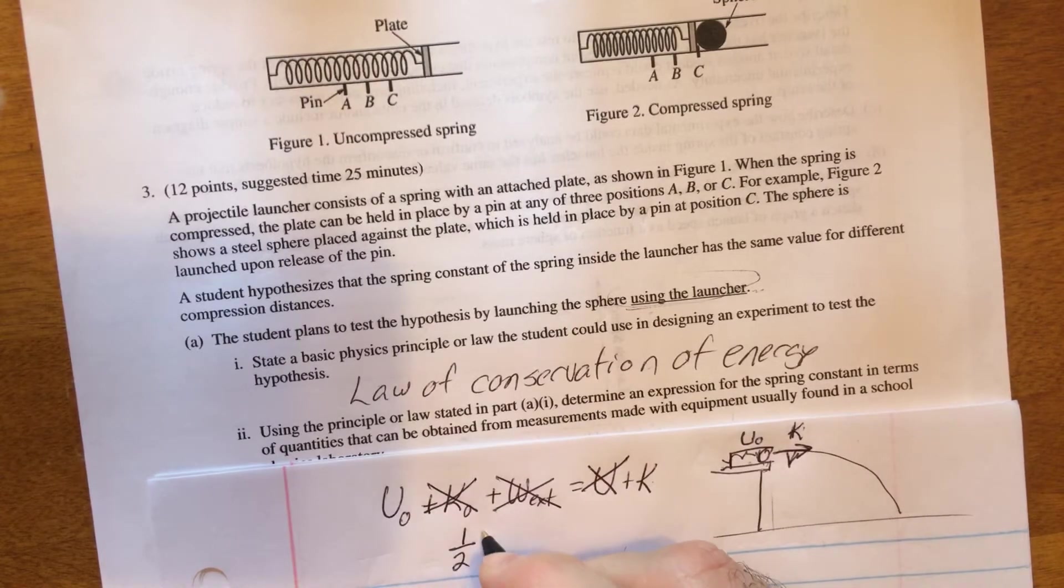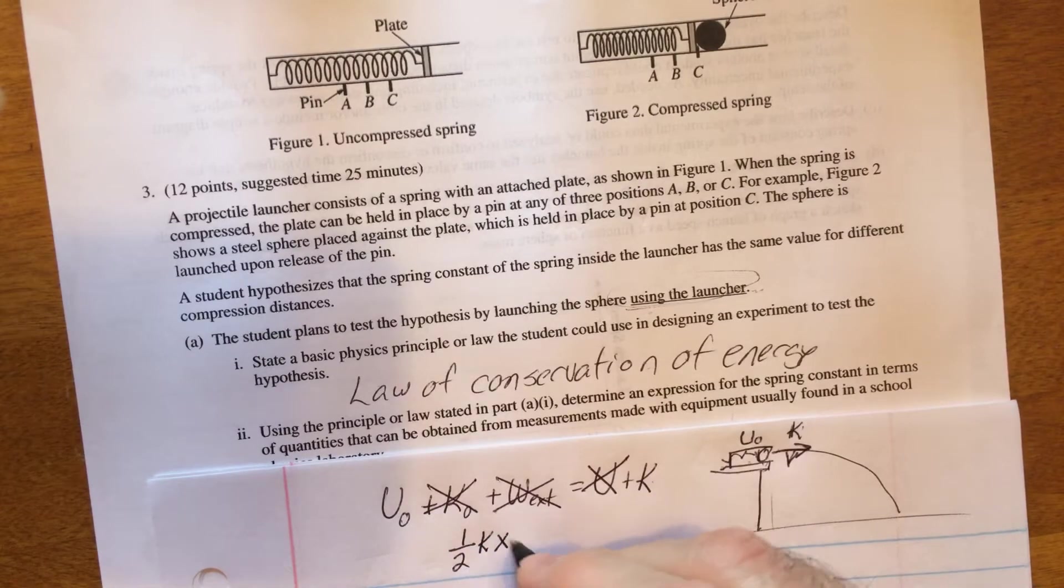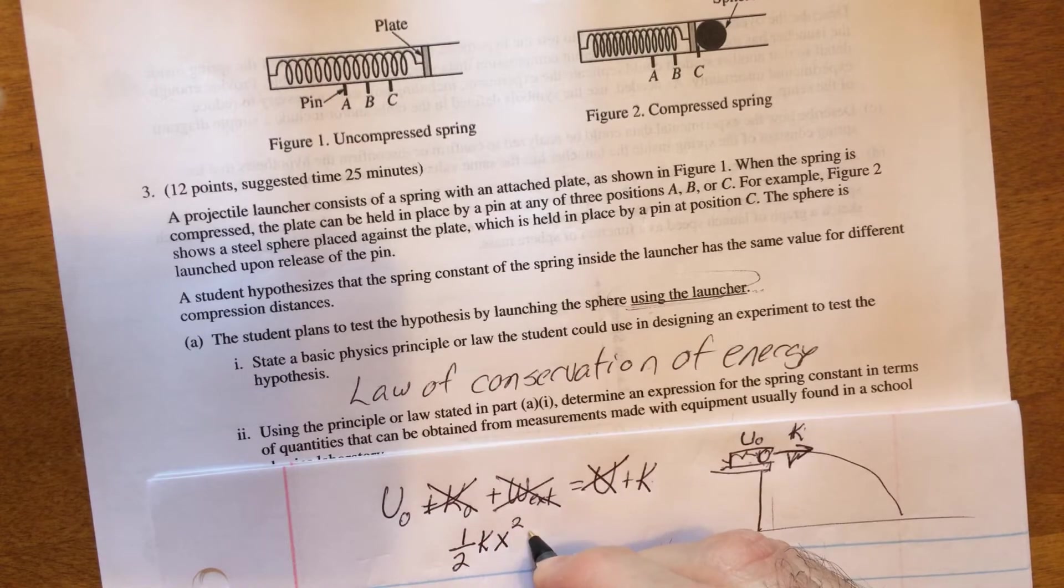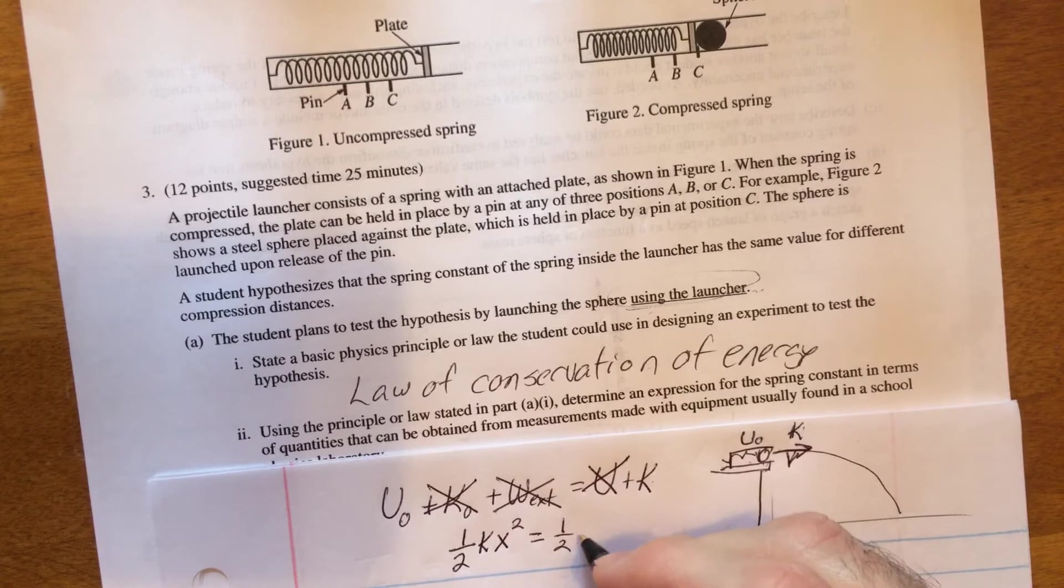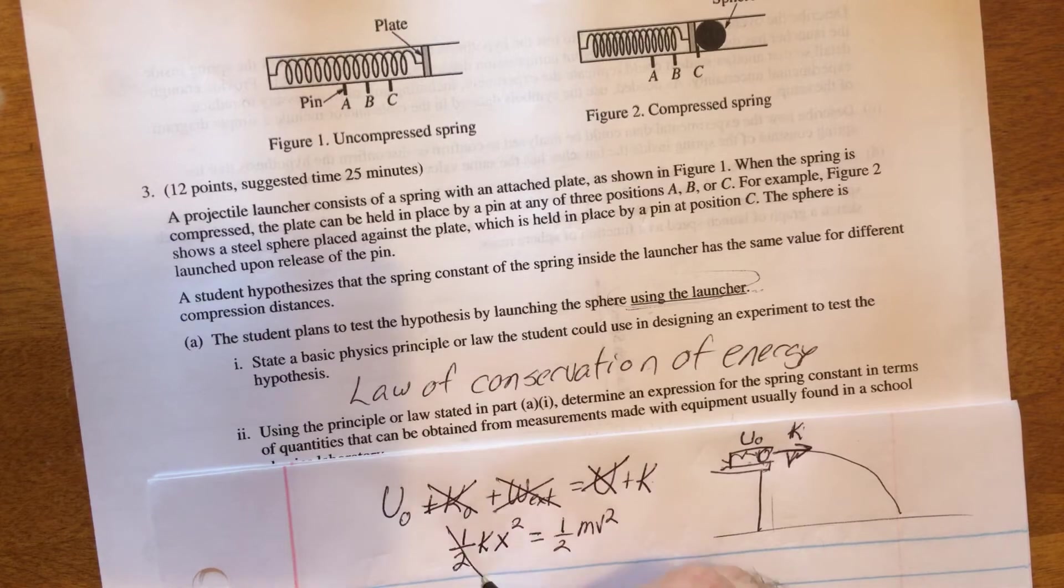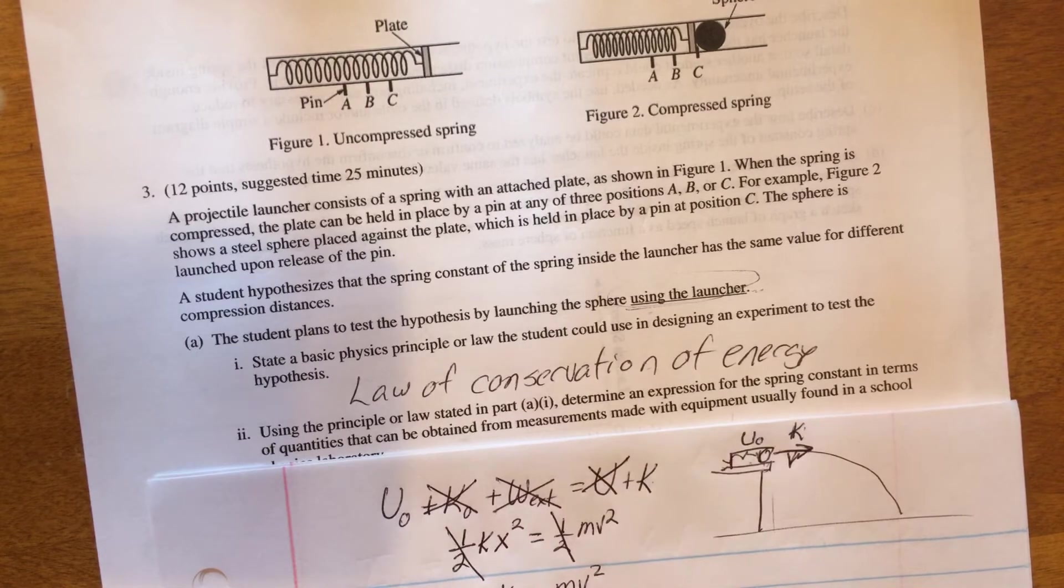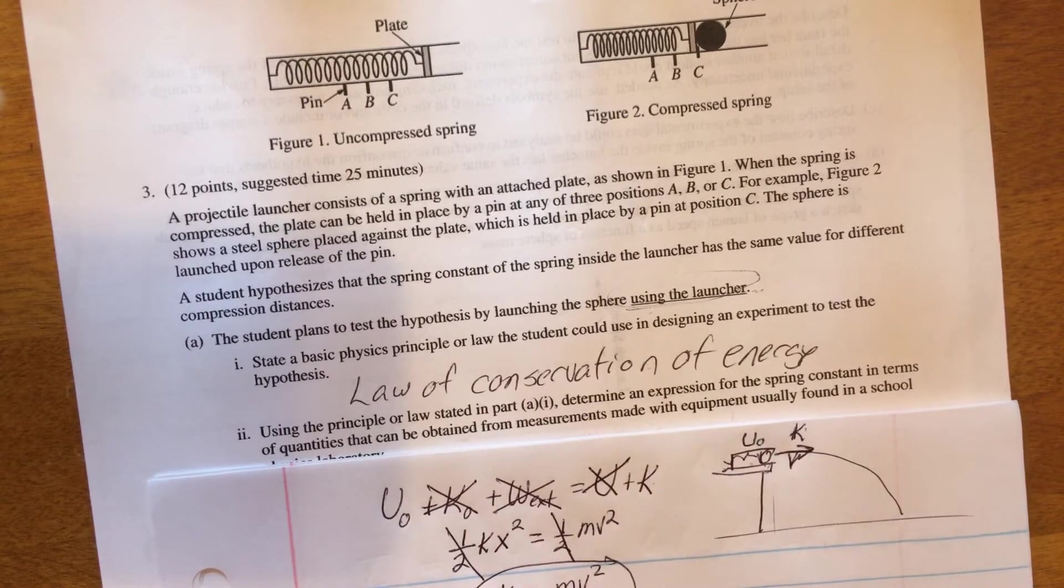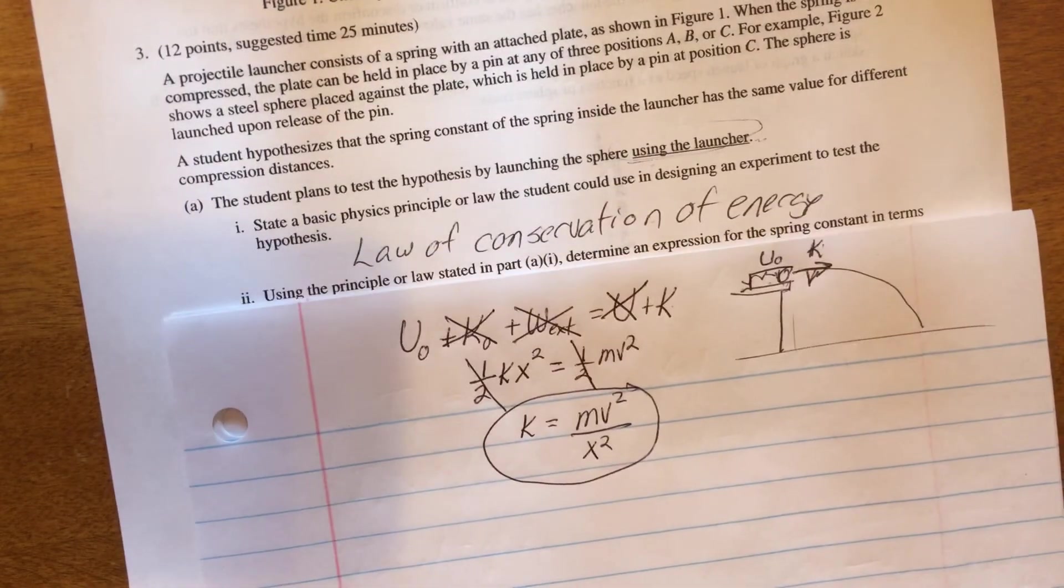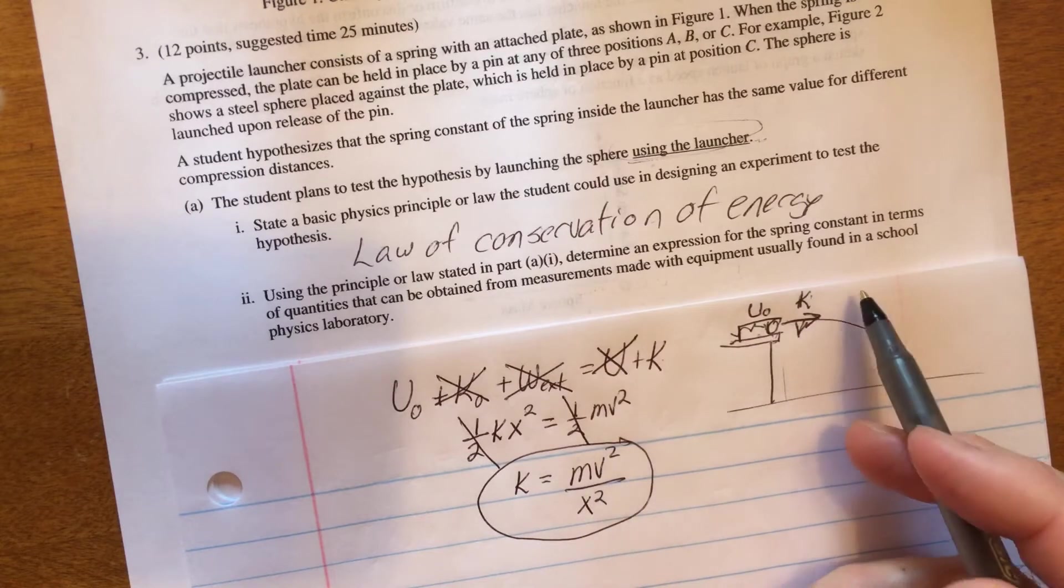Now elastic potential energy is one half spring constant times the compression length squared and kinetic energy is one half mv squared. And so the halves would cancel out and I would divide by x squared and I would see that k equals mv squared divided by x squared. That is my derivation or my expression for the spring constant in terms of quantities that I can obtain from measurements.